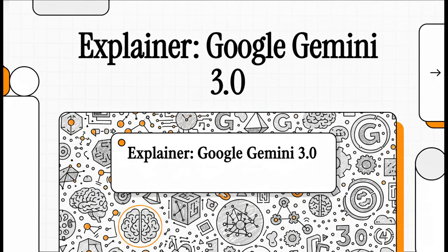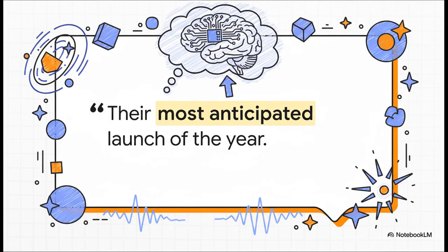Google just launched Gemini 3.0, the very first model in their new Gemini 3 family, and it's rolling out everywhere right now. Let's get into what makes this so special. Google themselves are saying this is their most anticipated launch of the entire year. And once you see what it can do, you kind of get it. This isn't just hype—it's about the absolutely massive promises Google is making with this new AI.